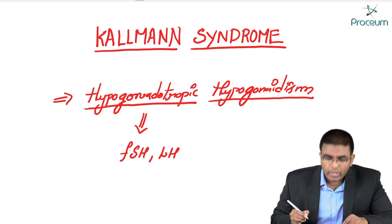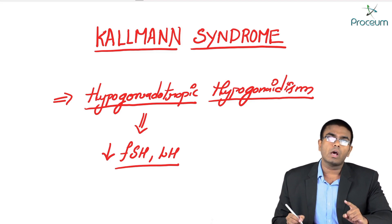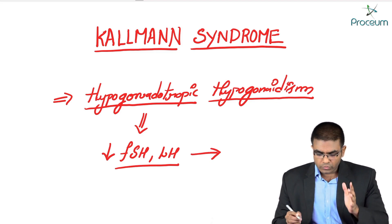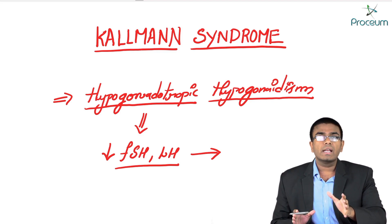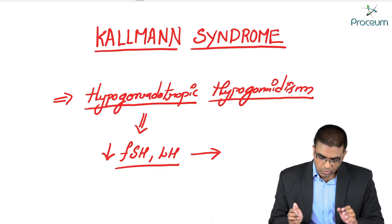In a female who has Kallmann syndrome, there is a decreased production of these gonadotropin hormones. Usually, these gonadotropin hormones act on the gonads — for example, in the ovaries, the follicles are stimulated and developed so that ovulation happens and a normal menstrual cycle occurs. Follicle stimulating hormone usually stimulates the gonads.